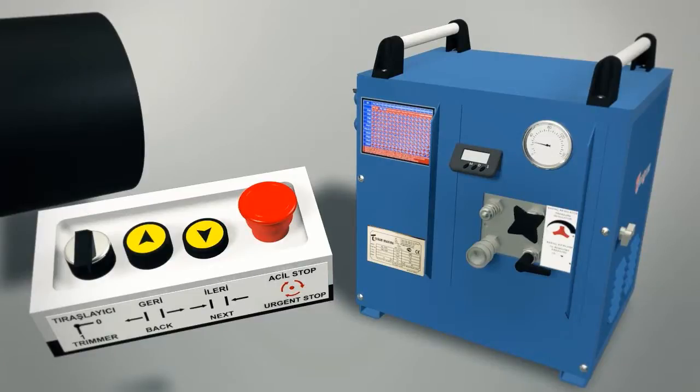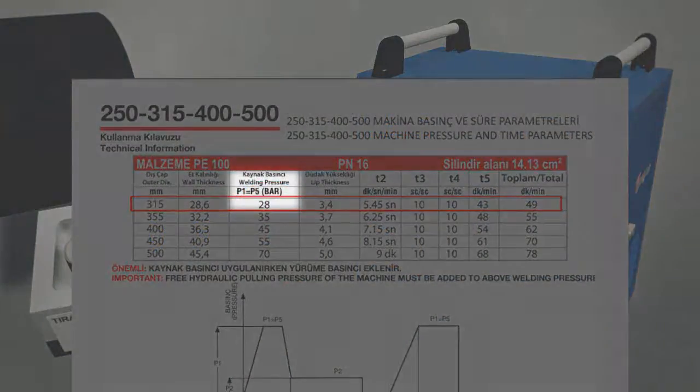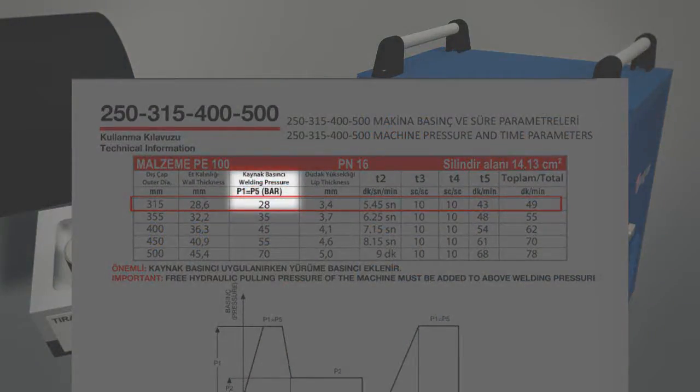Rotate the pressure regulator clockwise. Adjust total pressure by adding walking pressure into welding pressure according to how welding pressure is in the chart.